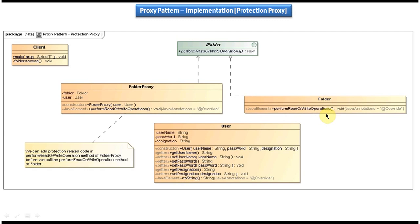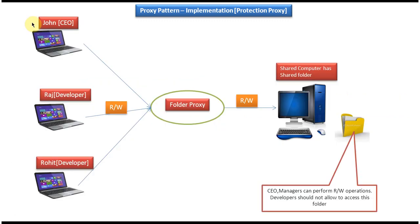The performReadOrWriteOperation method in Folder will perform the real read or write operation. In FolderProxy, the method checks whether the user has permission to access the folder. If the user has permission, it will call the real Folder's performReadOrWriteOperation method. If the user does not have permission, it will return a message saying you don't have permission to access the folder.